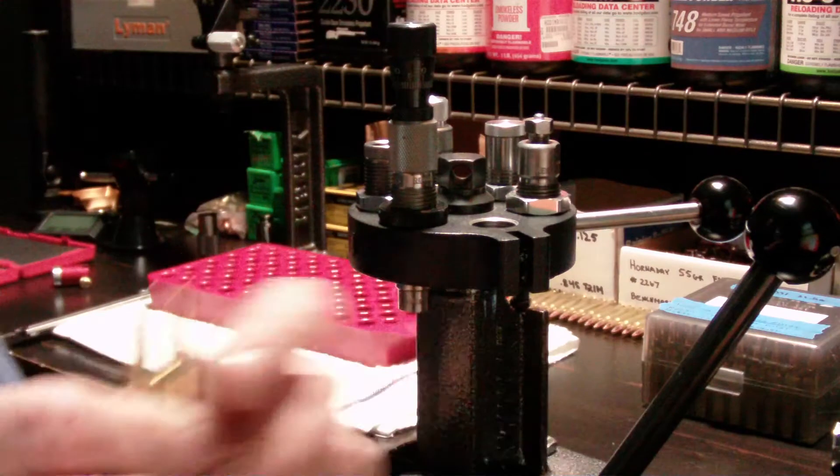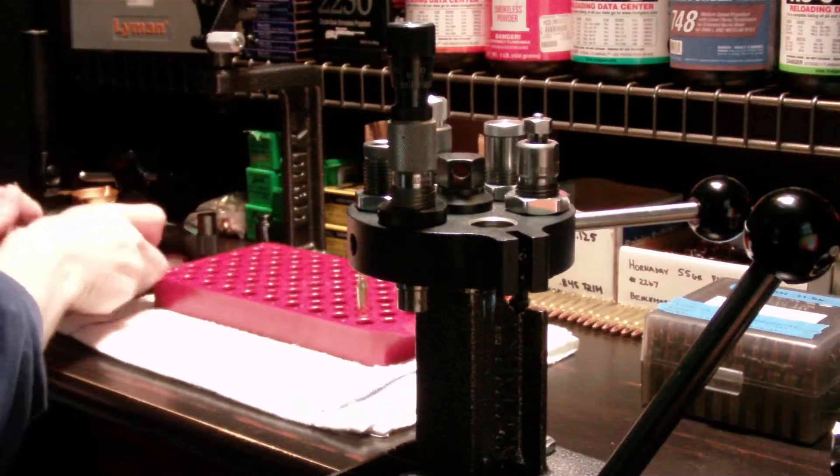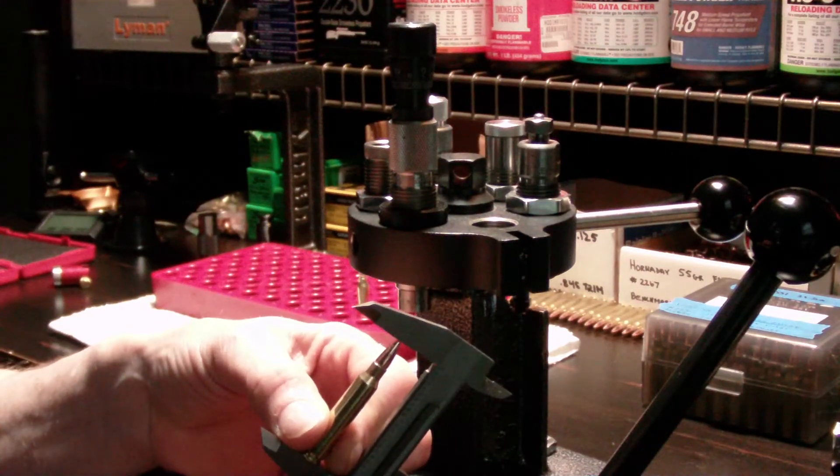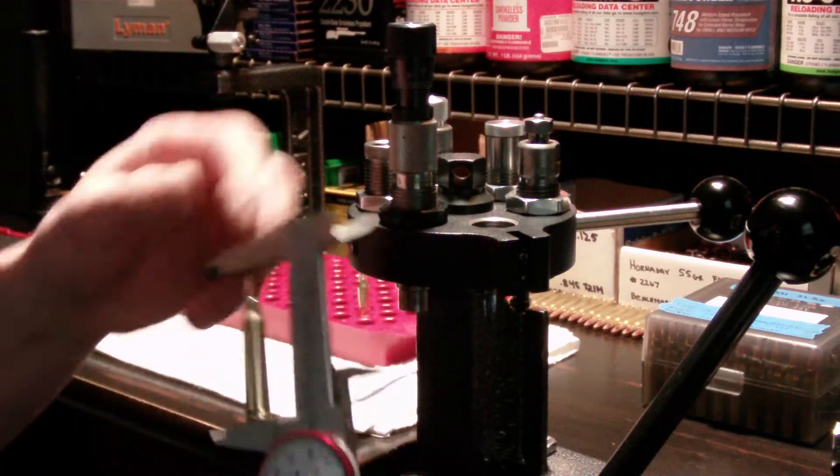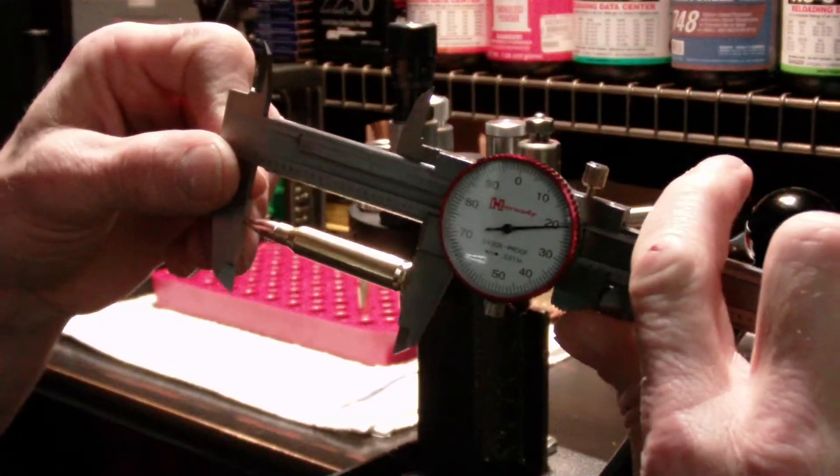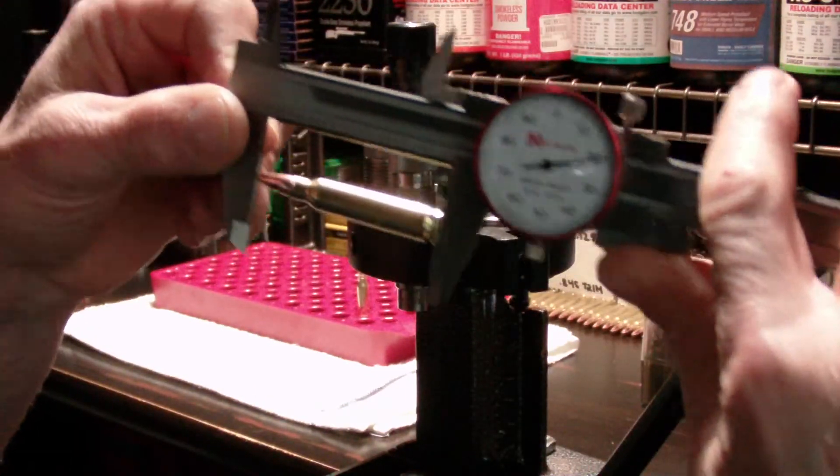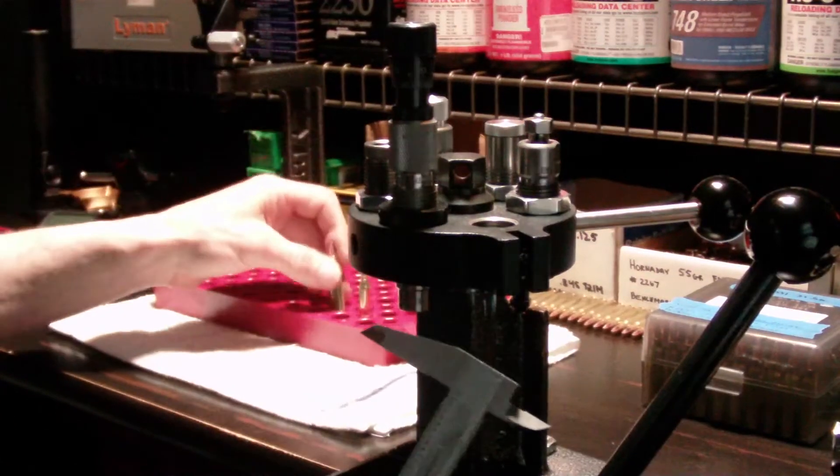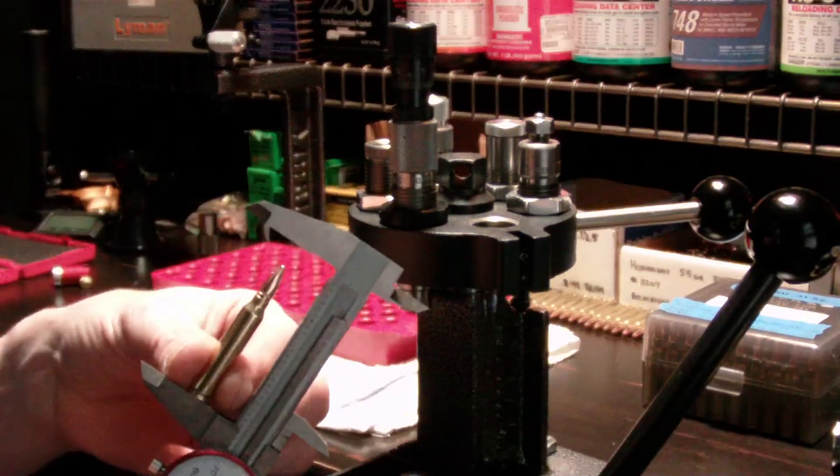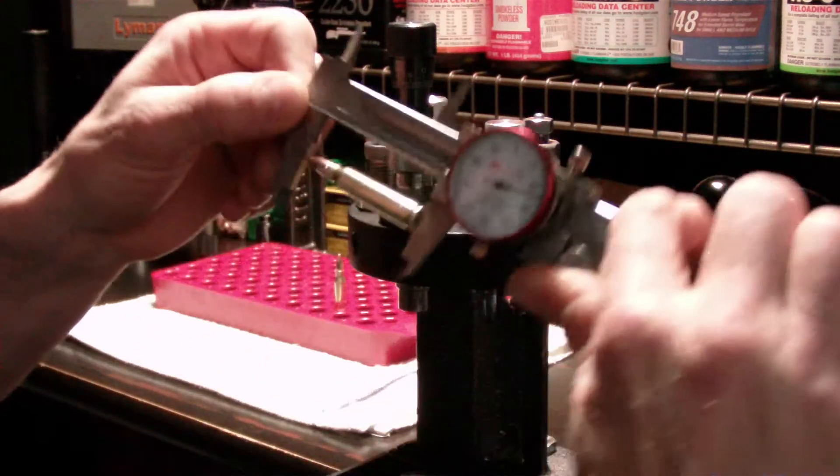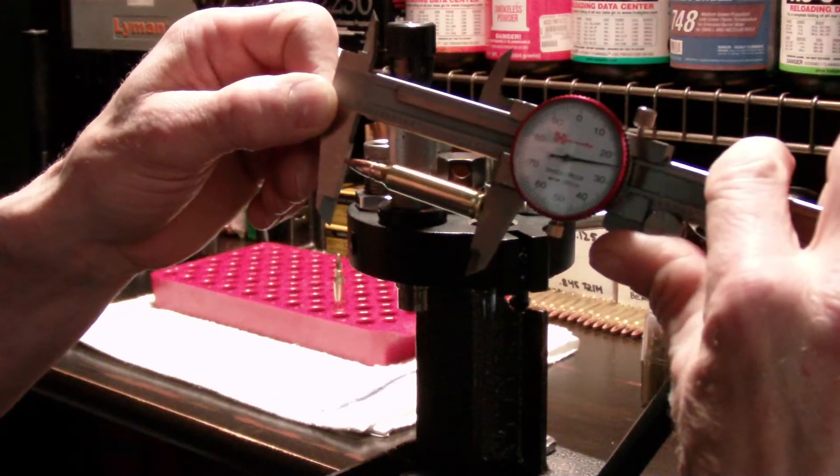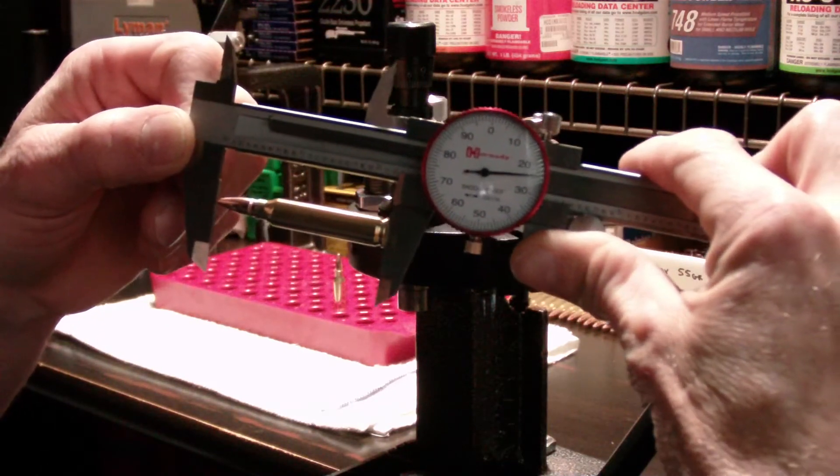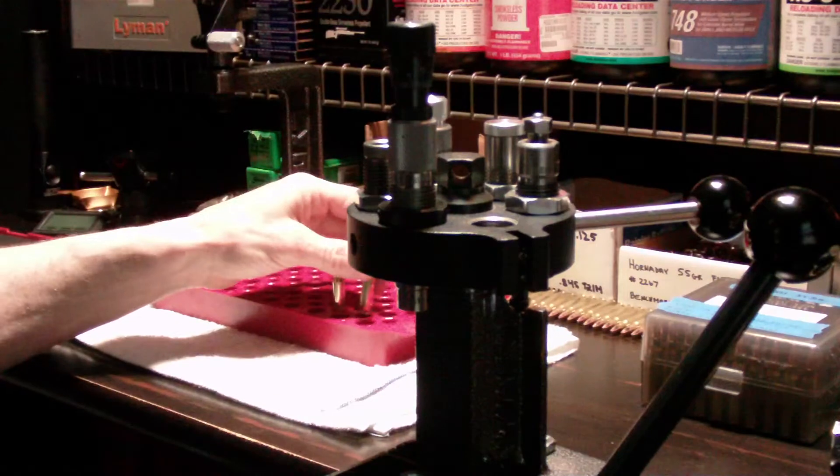So putting these in the micrometer, this is the 1.750 case - it's gonna measure at 2.201, right around there, so a thousandth off your target overall length. And this one here measures at 2.204. So there's a three thousandths difference between these two bullets.